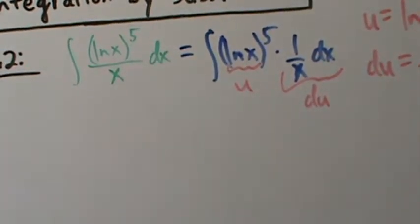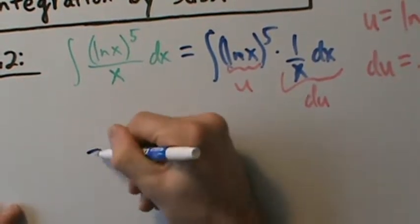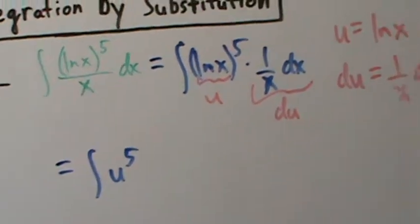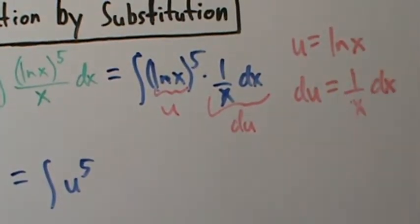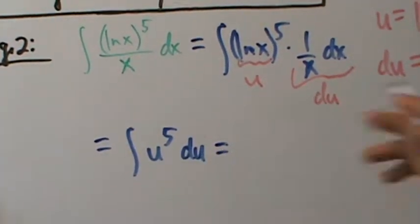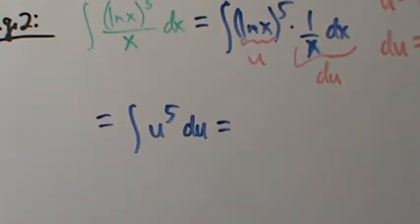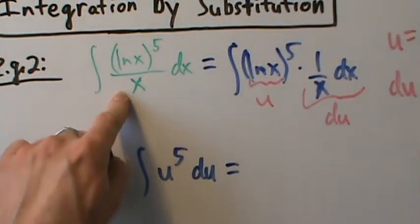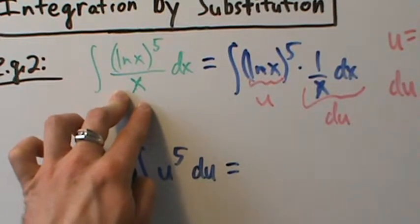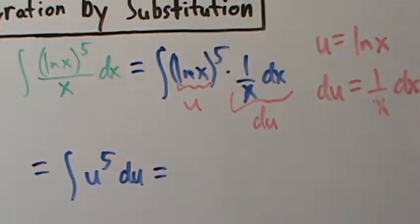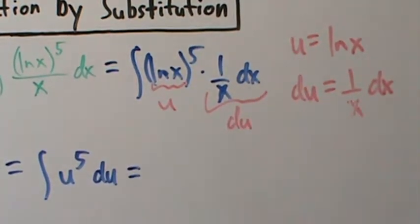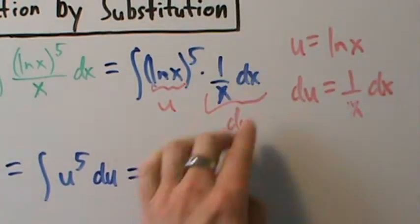This integral becomes the integral of u to the fifth power. This natural log of x is being raised to the fifth, so we're letting u be natural log of x, raising that to the fifth, and then 1 over x dx becomes du. When we look at this it looks kind of complicated — we've got natural log being raised to the fifth and an x on the bottom. But what we did is we just said: let me take this thing, call it u. And then it works out nicely because this expression becomes du.